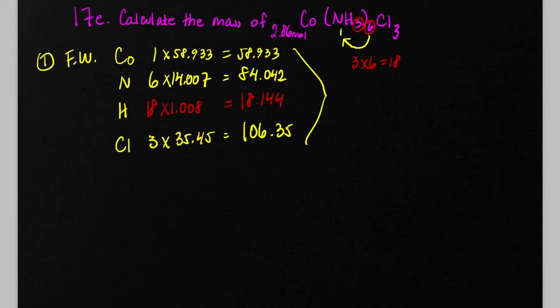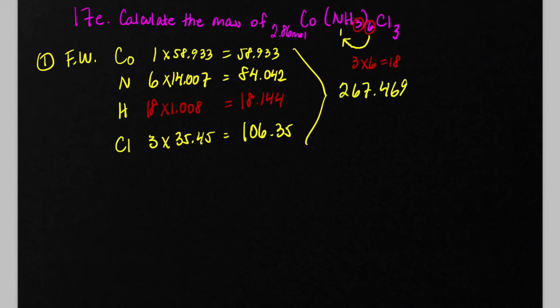Once we get all of these weights from the different elements, we need to sum them all up, and that's going to be the formula weight of this substance in units of grams per mole.